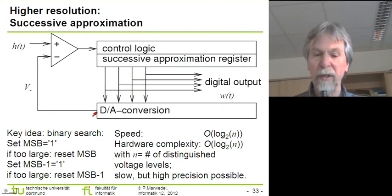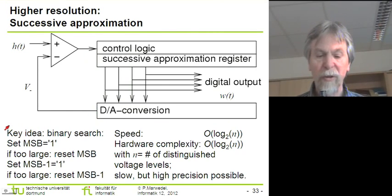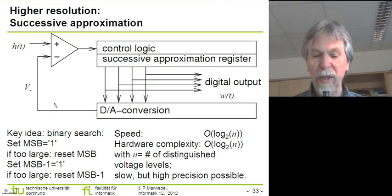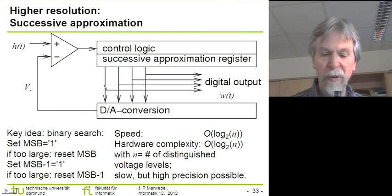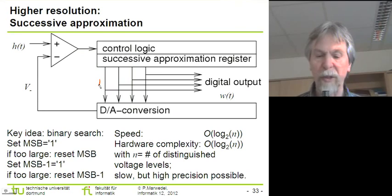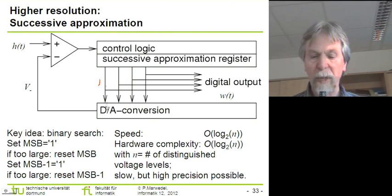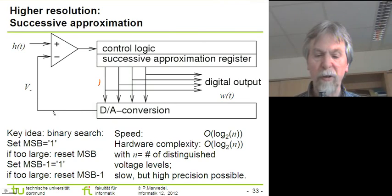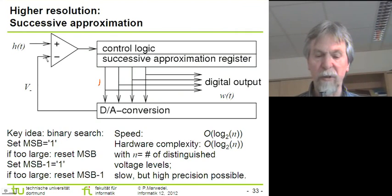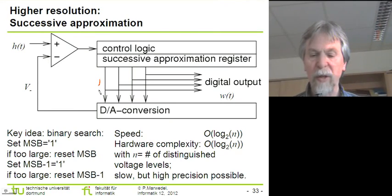The key idea of successive approximation is well known to computer scientists because what we exploit here is the idea of binary search. Initially we set the most significant bit to one and all other bits to zero. Then we generate the corresponding analog voltage and check whether the input voltage still exceeds the generated internal voltage. If it does, we keep that bit set to one and start with the next bit.